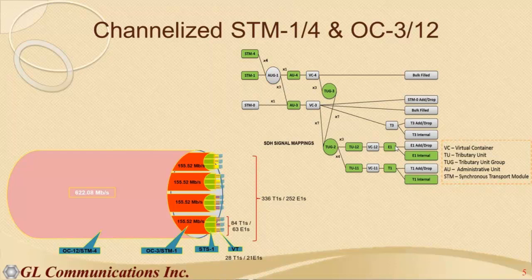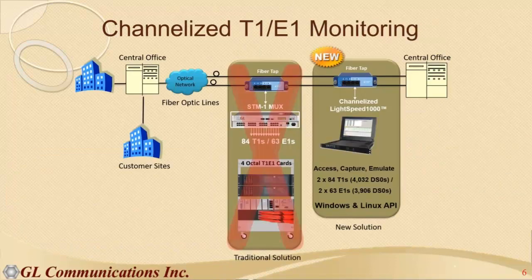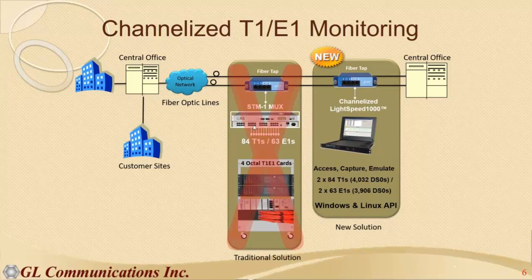The blocks marked in green are the paths available in LS1000 — these are the currently supported paths. The traditional solution for T1/E1 monitoring within STM1 required multiple hardware units — one STM1 mux/demux device and multiple cables linking to multiple T1/E1 hardware units — a very bulky solution needing a lot of hardware configuration, where missing a few things could easily lead to issues.